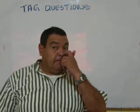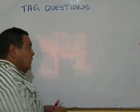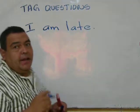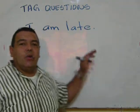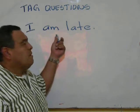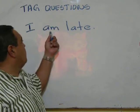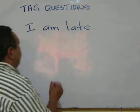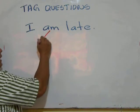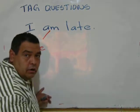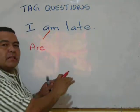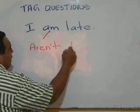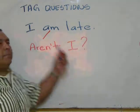Now, what happens when I'm talking about myself? 'I am late.' The tag question should go in a negative expression, but this is an exception to the rule. Whenever I talk about myself, instead of 'am' I'm going to use 'are' — only in this case. This breaks all the rules, but this is how it is. 'I am late, aren't I?'